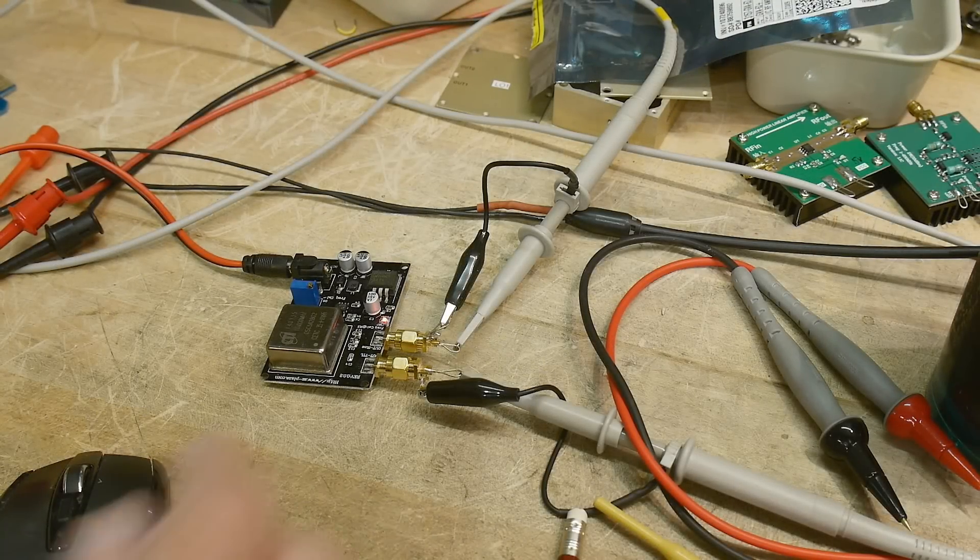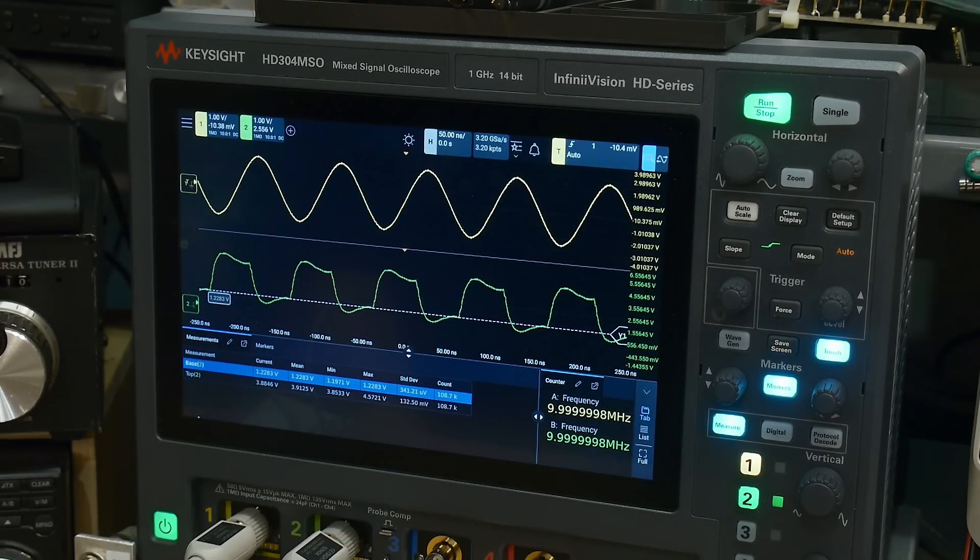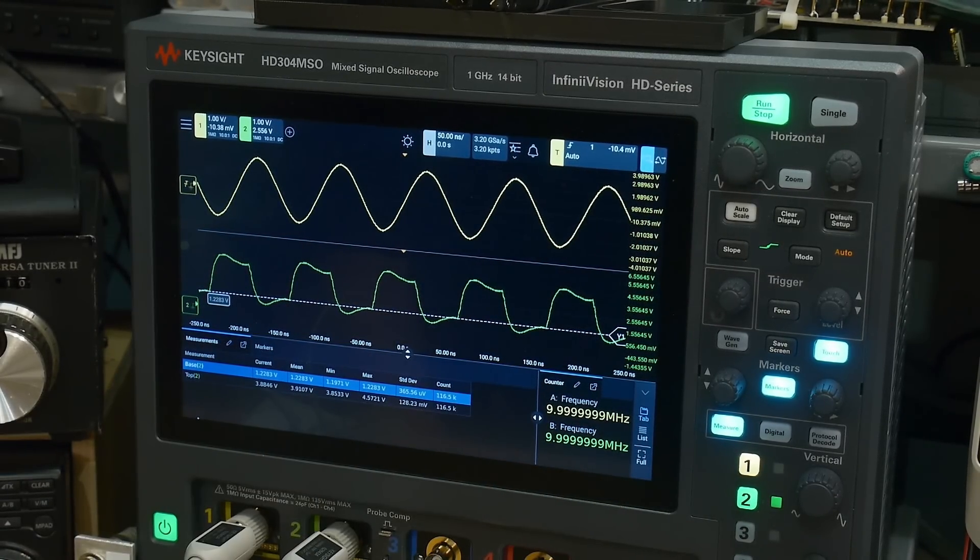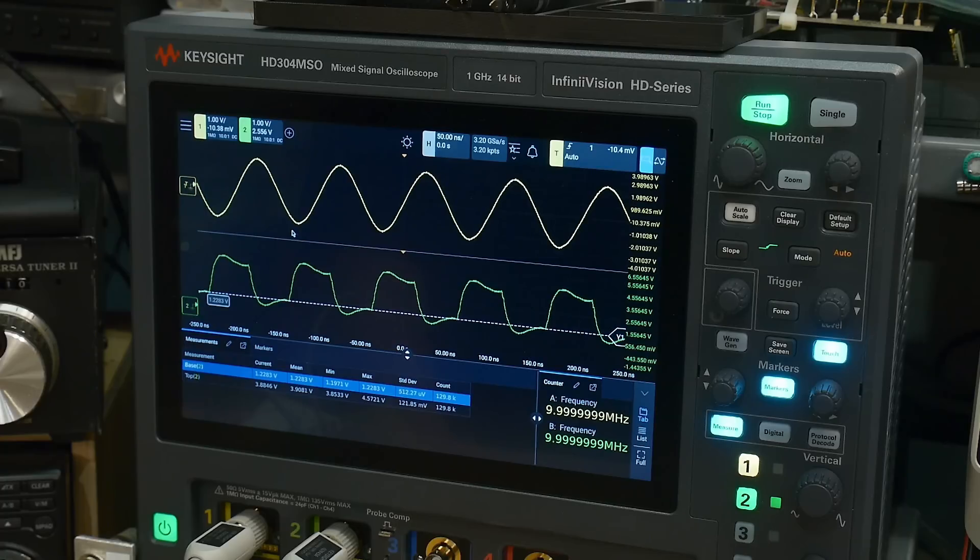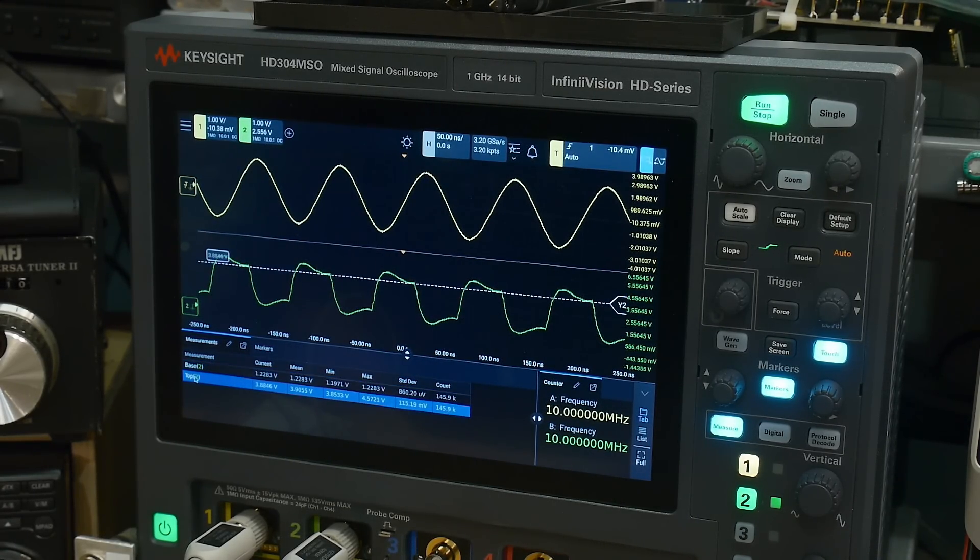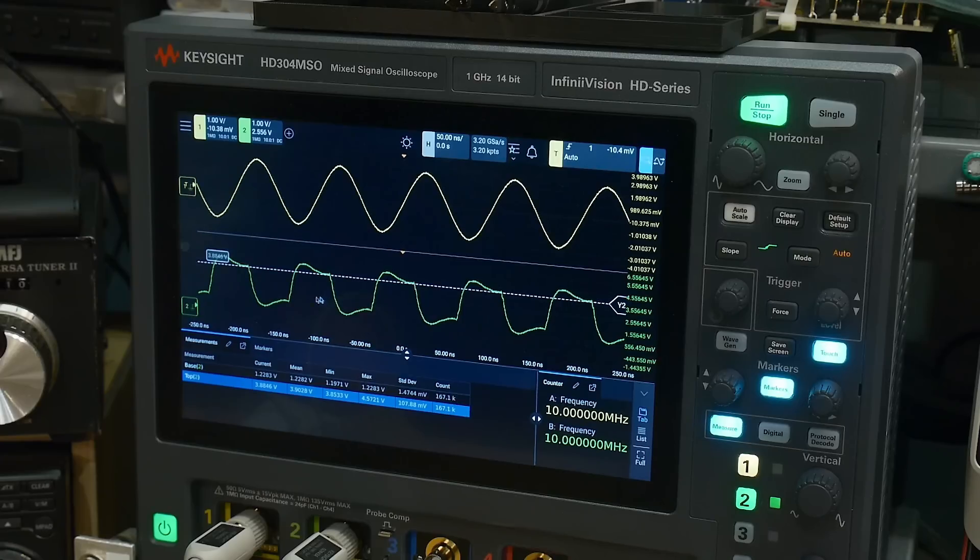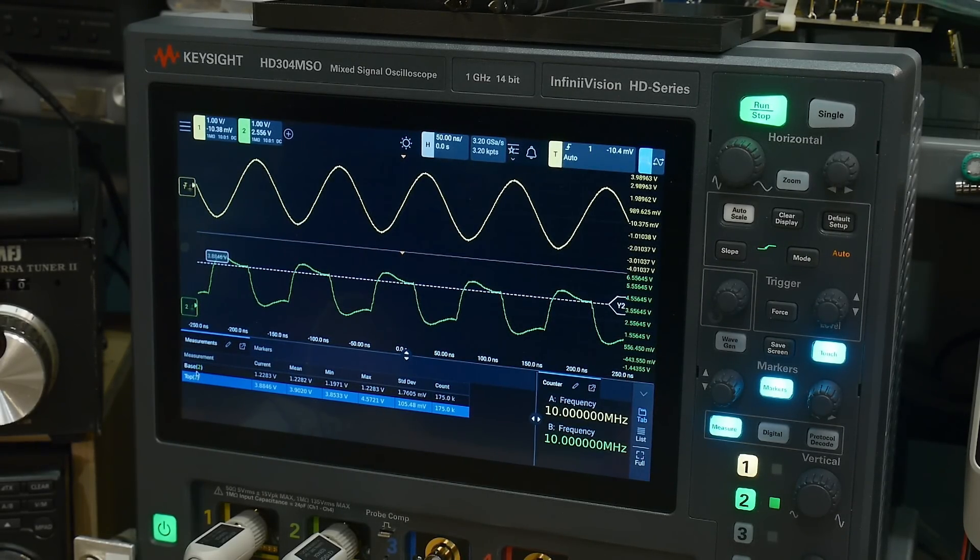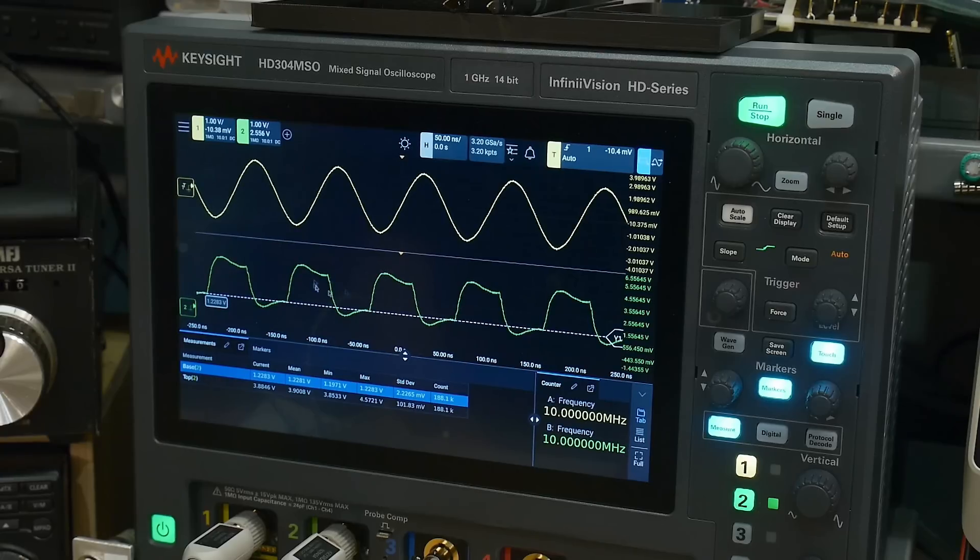Alright. So I have it hooked up to channels one and two. And you can see that we have the sine wave here and the TTL output there. So we get this nice sine wave at 10 megahertz here. But the TTL is really roundy and weird looking. And if I look at the top, it goes up to, let's see here, 3.88 volts. That's an okay high. But the low only goes to 1.22 volts. So it's not really TTL compatible.